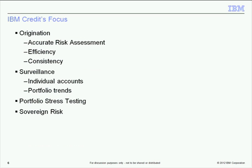Our credit focus is making sure that credit risk is considered in making business decisions and that we support IGF in meeting its financial targets. The three or four main topics I want to talk about today: where credit focus is at the origination of the asset acquisition process; after we have the assets on the books, we maintain monitoring to ensure asset health; we look at the overall portfolio to avoid surprises as companies evolve over time; and lately, sovereign risk has become a very important factor in our credit decisioning.